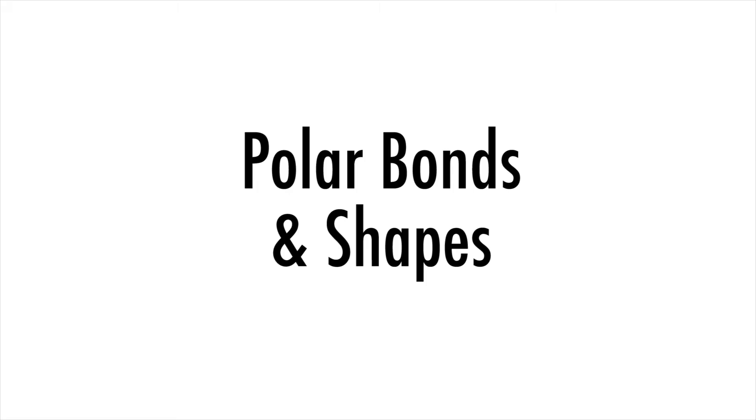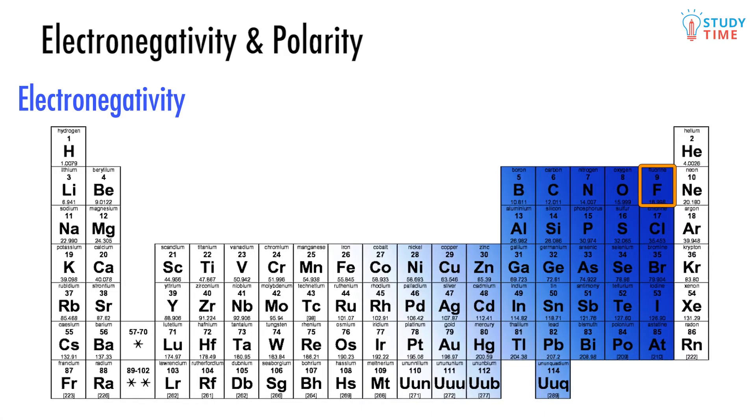In most compounds, when there are different kinds of atoms making up the molecules, there will be a difference in the electronegativities. This is only natural because different elements have different levels of electronegativity. For example, take carbon dioxide.